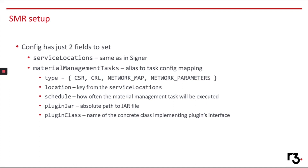The SMR service is responsible for fetching the signable material and passing it via a plugin onto external signing infrastructures. It is relatively easy to set up since it has only two configuration fields. First are service locations — the remote locations from which we want to fetch the signable material. After that, we specify material management task entries, which include: the type of material to fetch (CSR, CRL, network map, or network parameters), the remote location from which to fetch it, the schedule for how often SMR should poll for that material, and the plugin jar path and class name from which plugin methods will be invoked.